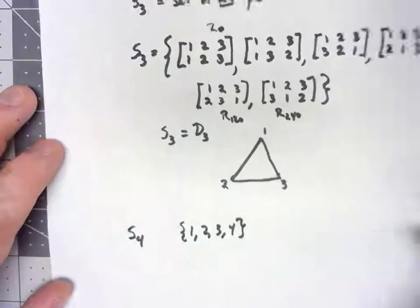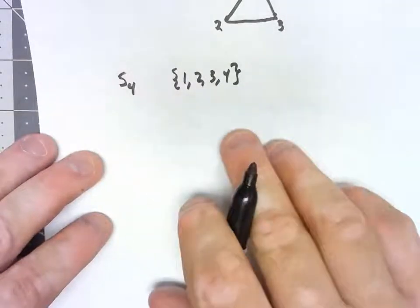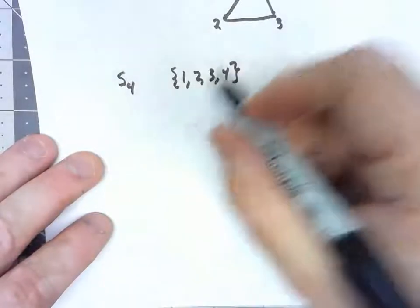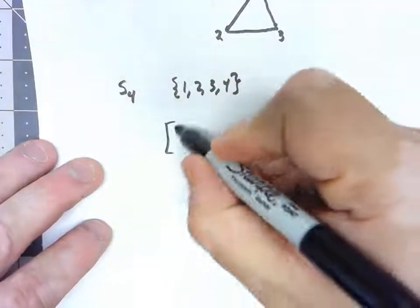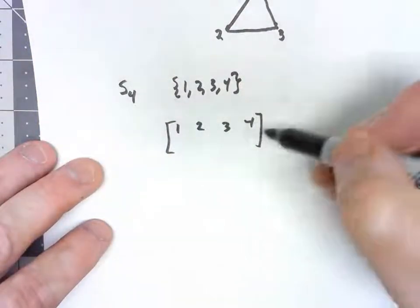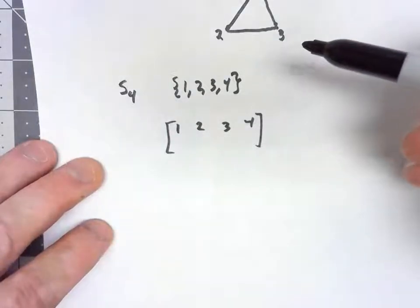I'm not going to list them all out. Let's think about how many there are in that group. If I think about doing one of these boxes with 1, 2, 3, 4, to figure out the number of permutations, I can kind of count how many choices there are for each of those things.